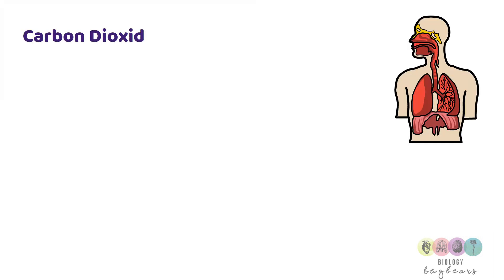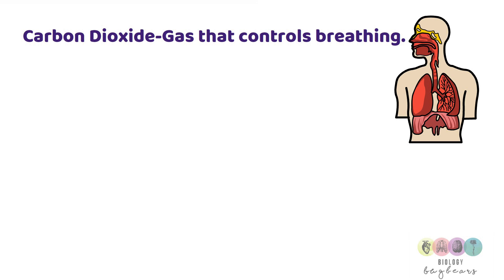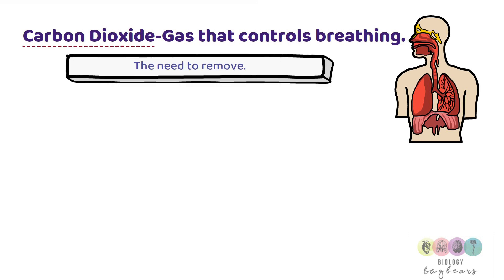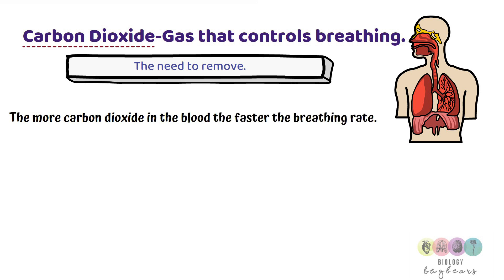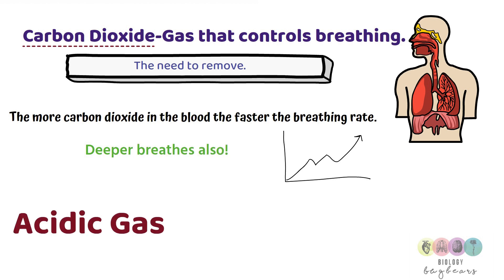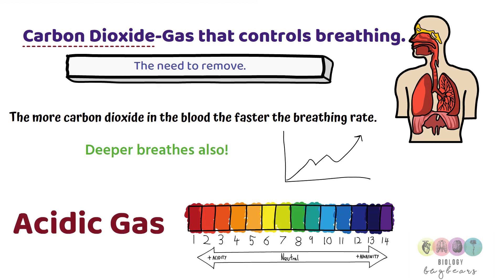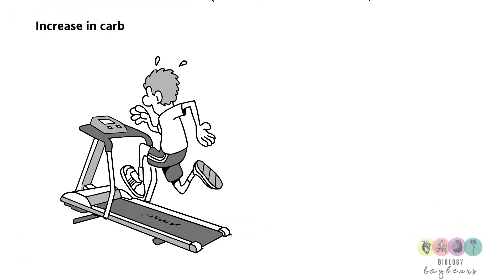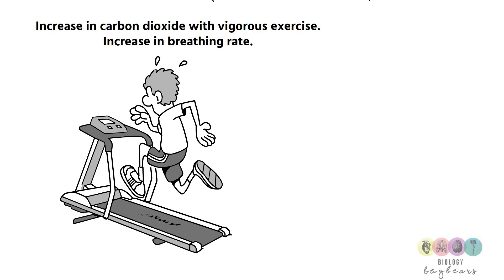Carbon dioxide is the gas that controls breathing, so it's the need to expel carbon dioxide that drives the breathing process. The more carbon dioxide in the blood, the faster the breathing rate — more breaths per minute and also deeper breaths. Carbon dioxide is an acidic gas, which means it lowers the pH of the blood, and this is detected by chemoreceptors. The level of carbon dioxide in the blood increases with vigorous exercise, which is why there's an increase in breathing rate.